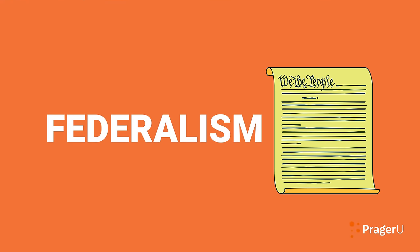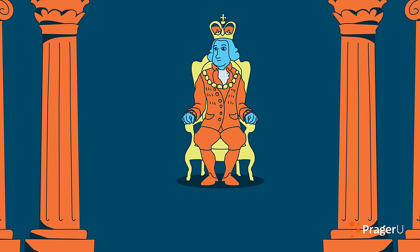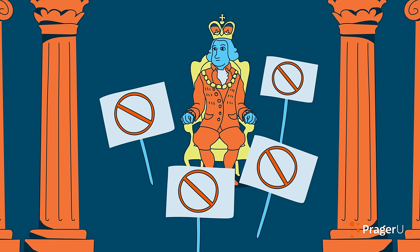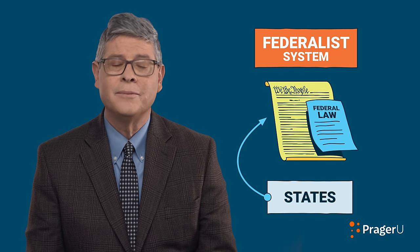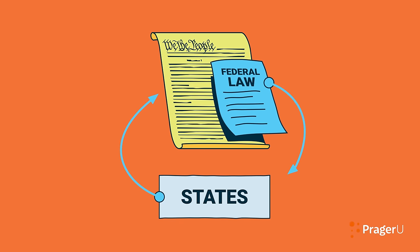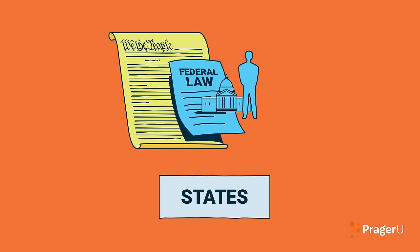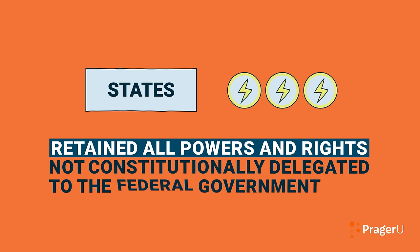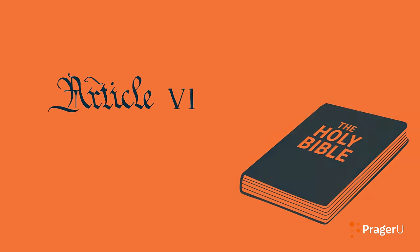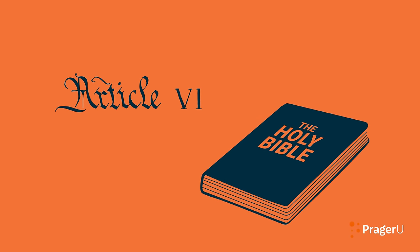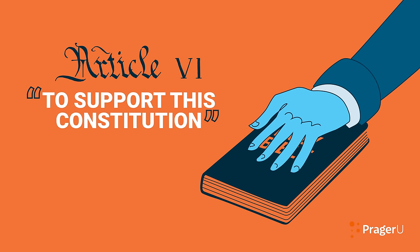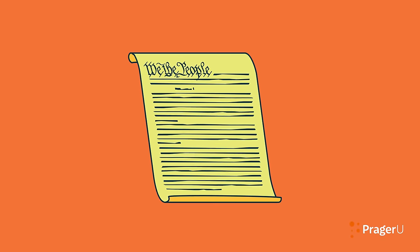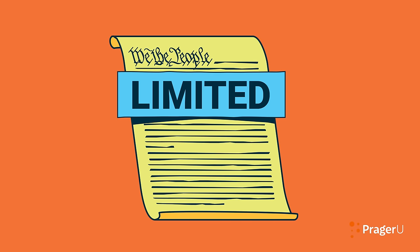Prior to the adoption of the American Constitution, nothing like it had existed in the history of the world. No nation had ever attempted to place these kinds of limits on a central government. For this new federalist system to work, states had to agree to be bound by the new Constitution and federal law. Federalism is a two-way street — federal officials also had to accept that their powers were limited, and that the people in the states retained all powers and rights not constitutionally delegated to the federal government. That's why Article VI requires every official in the national government and in the states to take an oath to support the Constitution — a federal Constitution of limited and divided power.